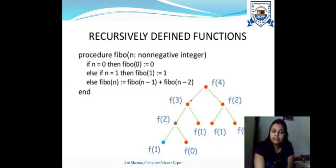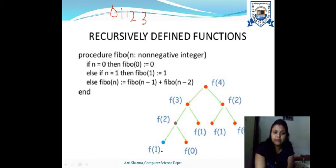Another example of a recursively defined function is the Fibonacci series. Initially we have two integers 0 and 1. Then 0+1=1, 1+1=2, 1+2=3, and so on — we can print up to n terms. If we have the initial two terms we print 0 and 1; otherwise we add the two previous values, f(n−1) and f(n−2), to get the next value in the Fibonacci series.